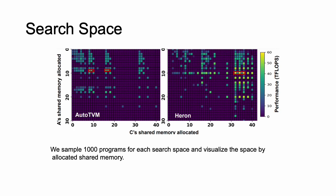Then, we visualize the search spaces of AutoTVM and Heron for 1,000 different programs. The x-axis represents the allocated shared memory size of the output tensor. The y-axis represents the allocated shared memory size of an input tensor. Each tile represents a subspace of the whole search space, and the color represents the best sampled program performance in the subspace. The lighter the color is, the higher the performance is. We find that Heron's search space is more irregular than AutoTVM, and that our search space contains more high-performance programs.